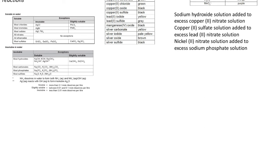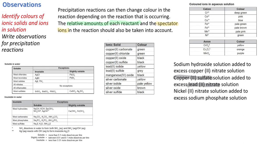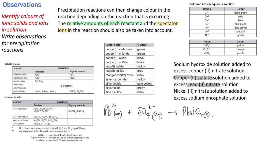The next one is copper(II) sulfate added to excess lead(II) nitrate. We're looking for any precipitations. Copper nitrate will not precipitate because all nitrates are soluble. Then we look for lead sulfate. Most sulfates are soluble except for lead sulfate — so lead sulfate is insoluble. The ionic equation is: Pb²⁺(aq) + SO₄²⁻(aq) → PbSO₄(s).